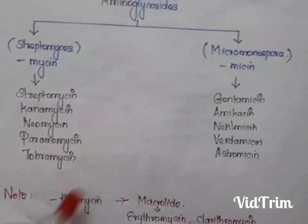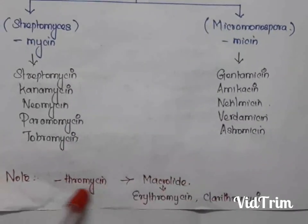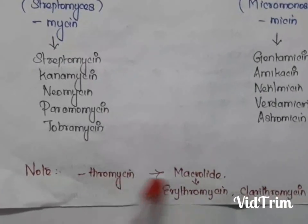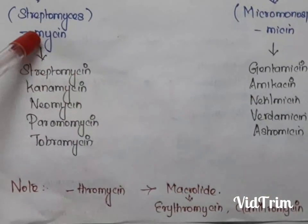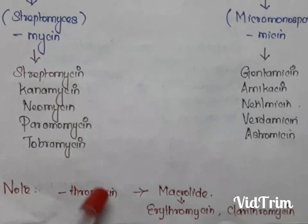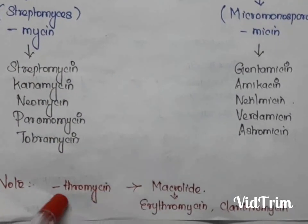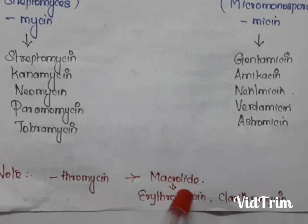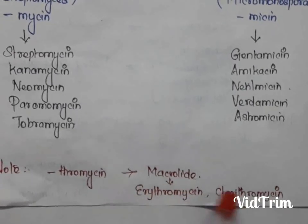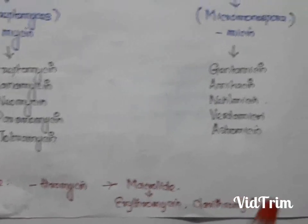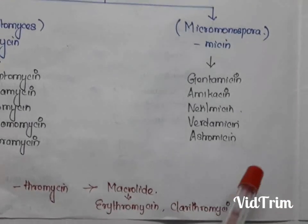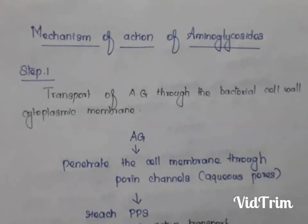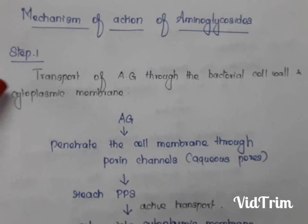We should not confuse these with drugs ending in '-thromycin' — those are macrolides. If a drug ends in '-thromycin' it is a macrolide, not an aminoglycoside. Examples of macrolides are erythromycin, clarithromycin, dirithromycin, and azithromycin.